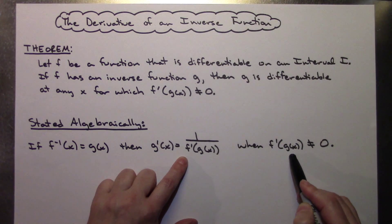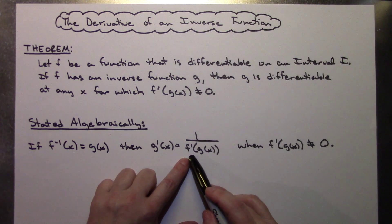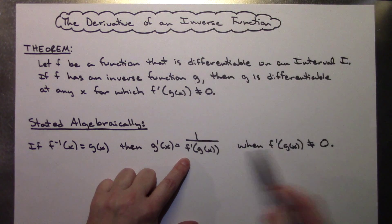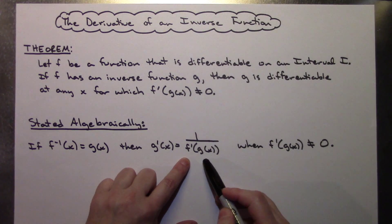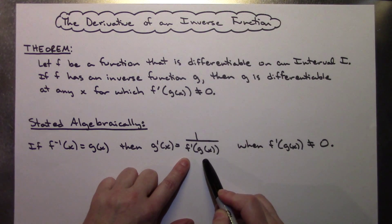And of course we have the indication that f prime of g of x cannot equal zero, because we can't divide by zero.